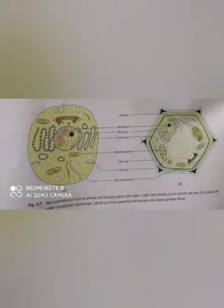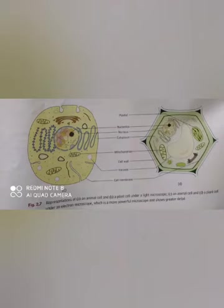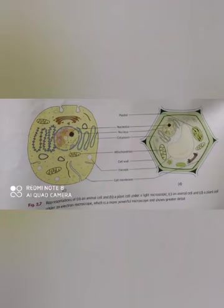Every organism has a fixed number of chromosomes. Next, we are going to revise about mitochondria. Mitochondria is called the powerhouse of the cell because they break down glucose and convert the energy into a form that can be easily used by the cells to power all their functions.